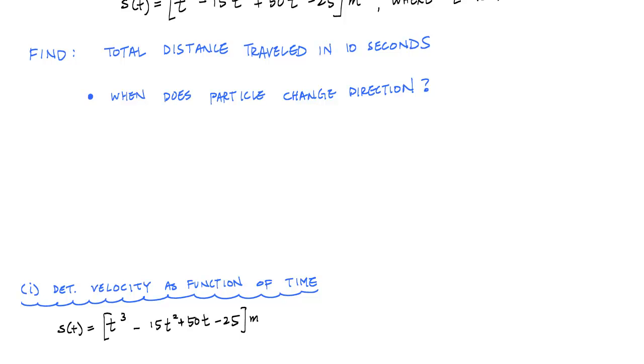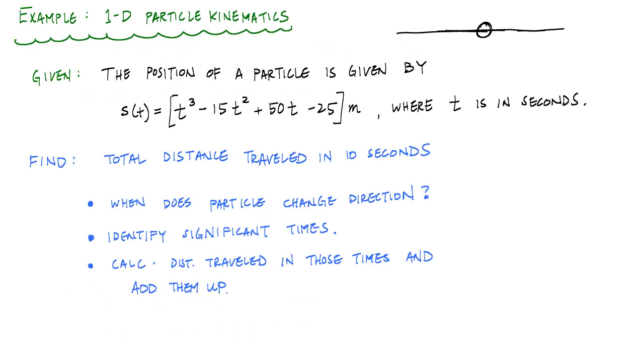The next thing that we're going to want to do is identify the important points and determine the relative distances between each of those points and add them up. That will be the total distance traveled. Really, the point of this problem is to illustrate the use of the critical point in calculus to understand what's happening to an actual particle as it moves back and forth in one direction only.